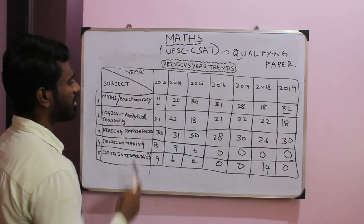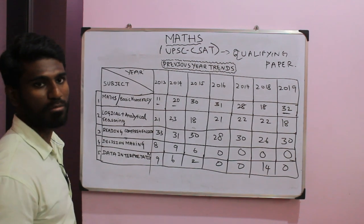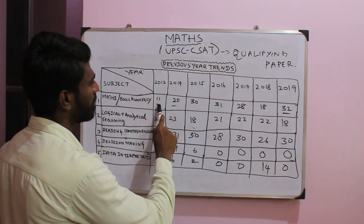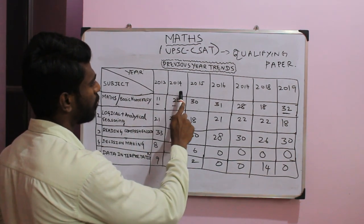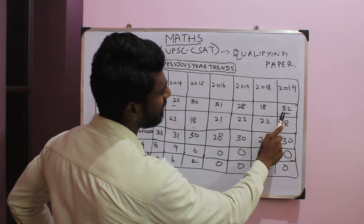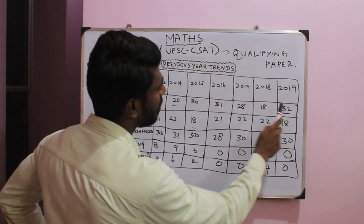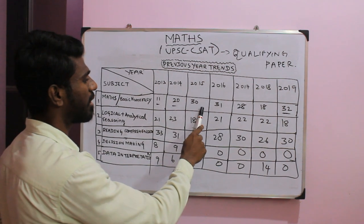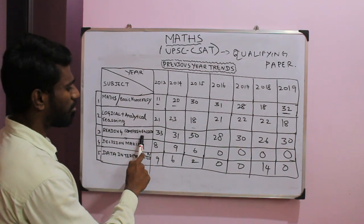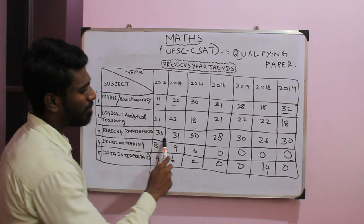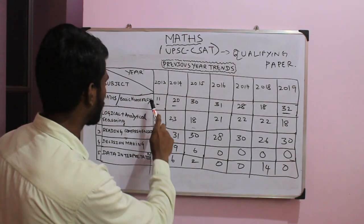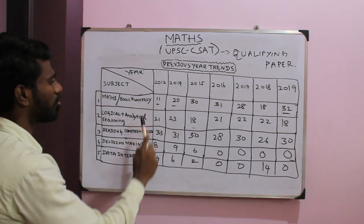In basic numeracy, you have number systems. In 2013 there were 11 questions, in 2014 there were 20 questions, and in 2019 there were 32 questions — giving an average of about 22 questions. The next part is reading comprehension, which typically has around 25 questions. These sections are important for preparation.